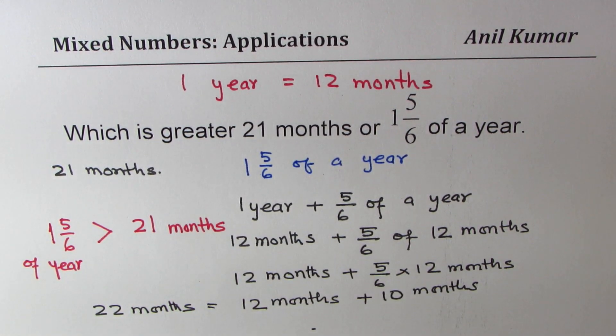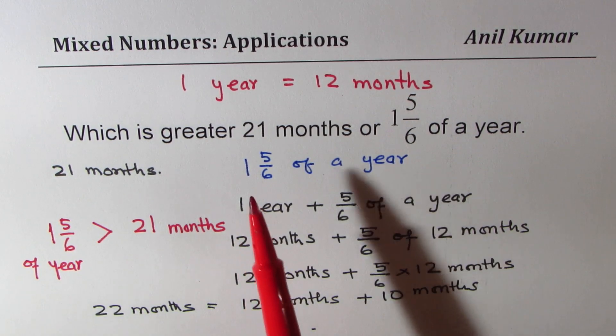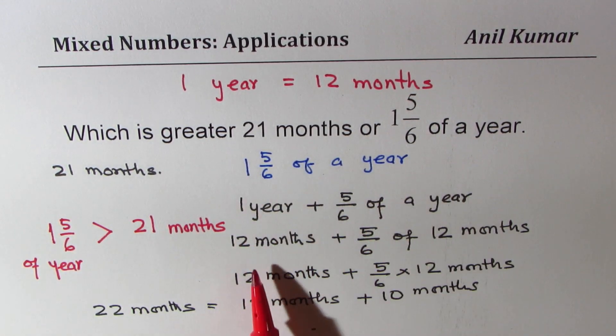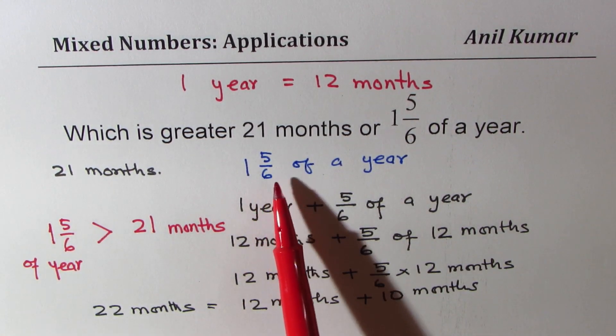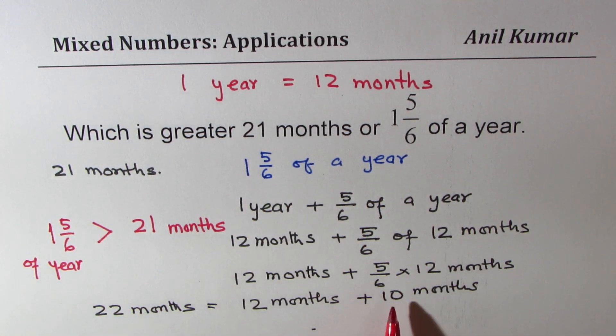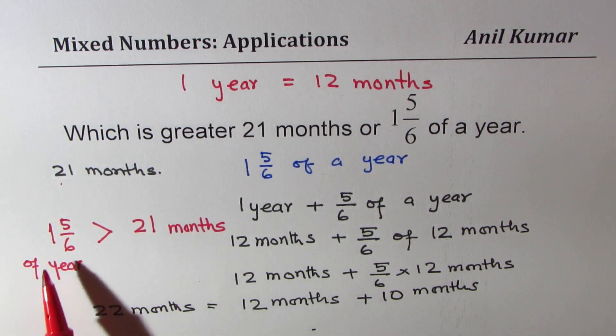1 5/6 does make sense to you, right? So 1 whole year means 12 months. 5/6 of a year will mean 10 months, right? When you add 12 and 10, you get actually 22 months. Since 22 months is greater than 21 months, 1 5/6 of a year is greater than 21 months. Perfect.